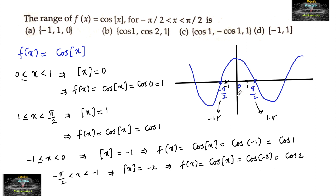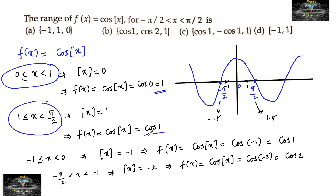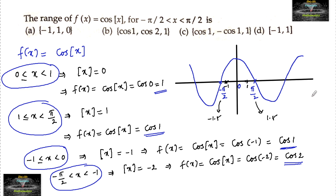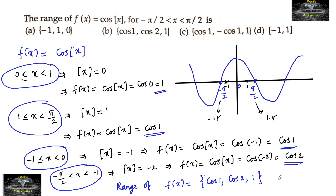So from minus π/2 to plus π/2, splitting the intervals: from 0 to 1 we get 1; from 1 to π/2 we get cos 1; from minus 1 to 0 we get cos 1; and from minus π/2 to minus 1 we get cos 2. Hence the range of f(x) is {1, cos 1, cos 2}.